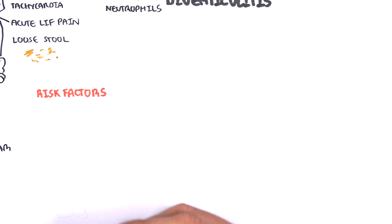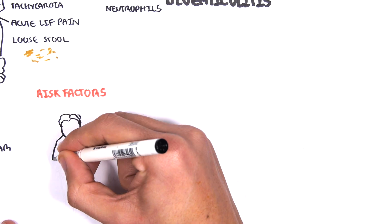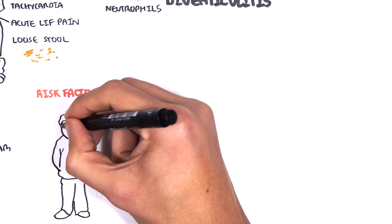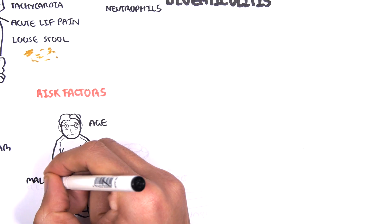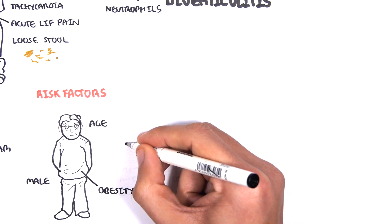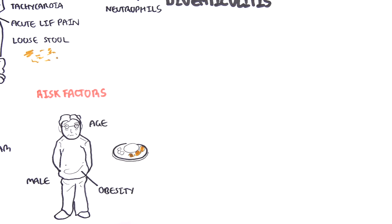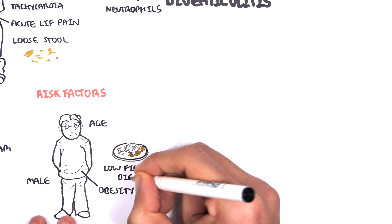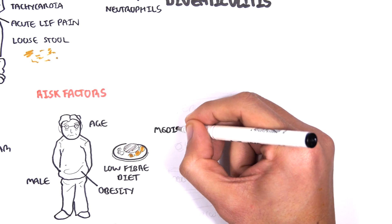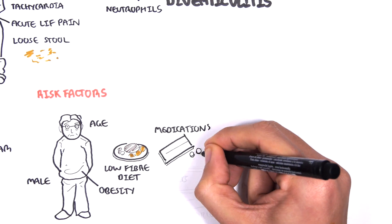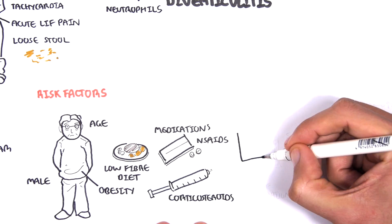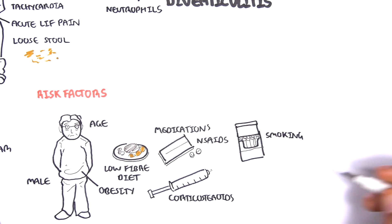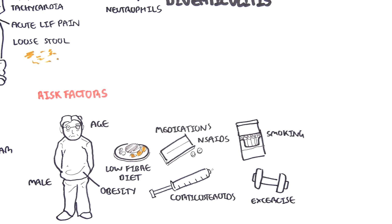The risk factors for diverticular disease, or for forming diverticula, include age — as it predominantly affects an older population — being male, being obese, having a low fiber diet, certain medications such as non-steroidal anti-inflammatory drugs and corticosteroids, and also lack of exercise.